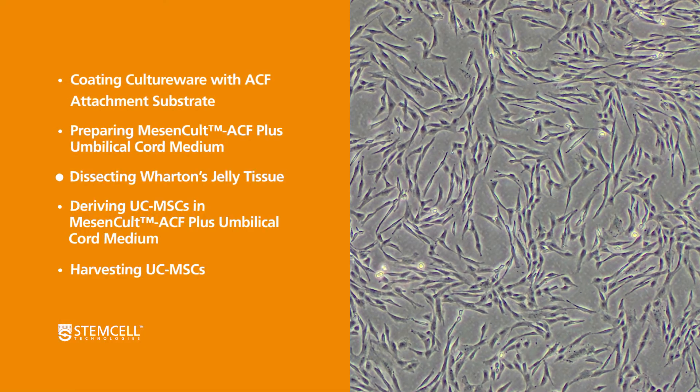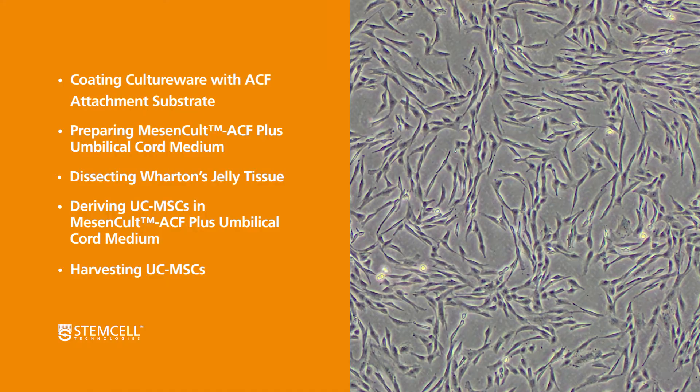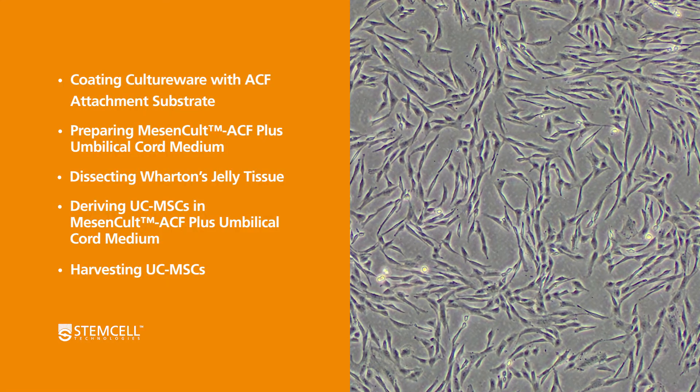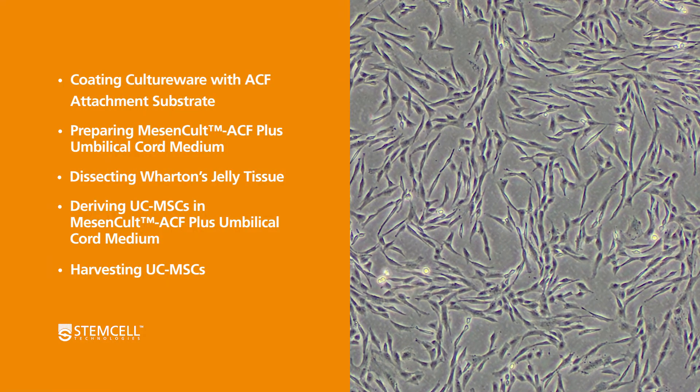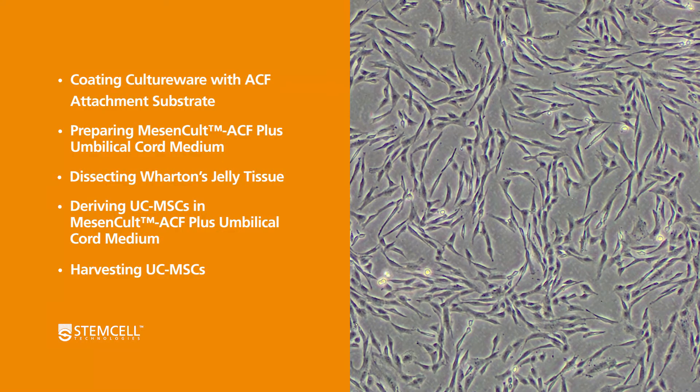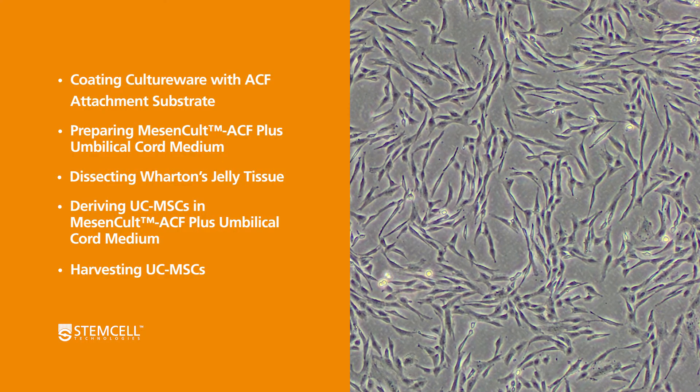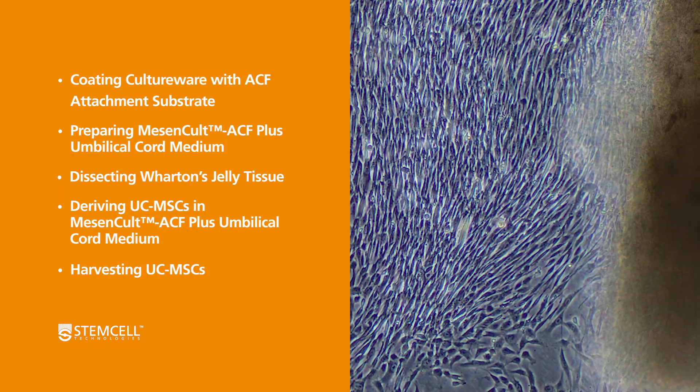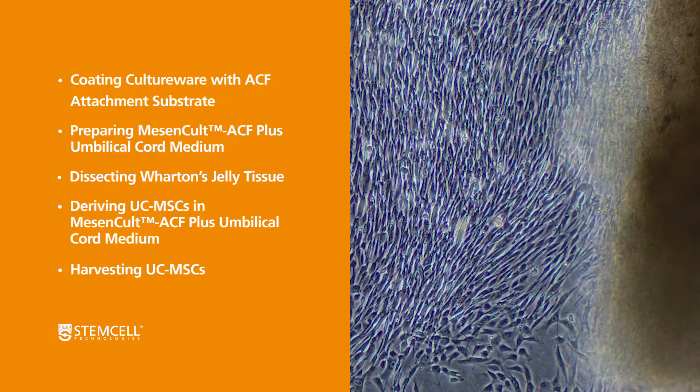This video will describe how to prepare the culture wear and medium, dissect the umbilical cord, and derive the MSCs using the MesenCult ACF Plus Umbilical Cord Kit by plating into a single T75 flask and passaging the derived cells for the first passage.